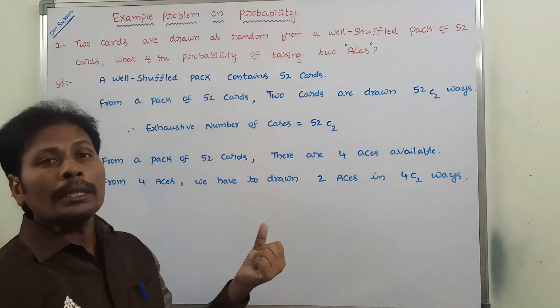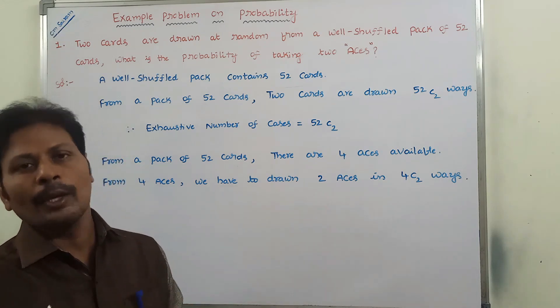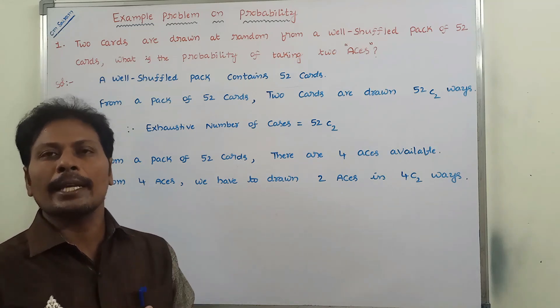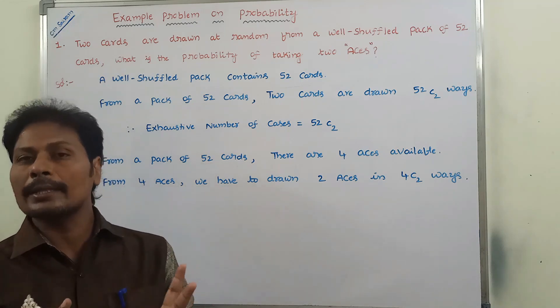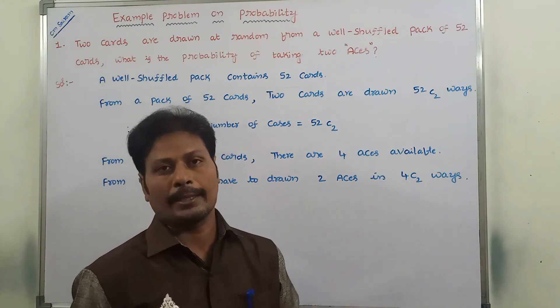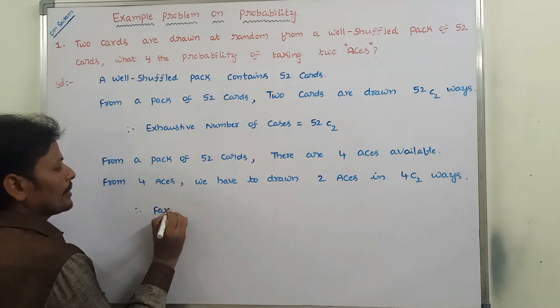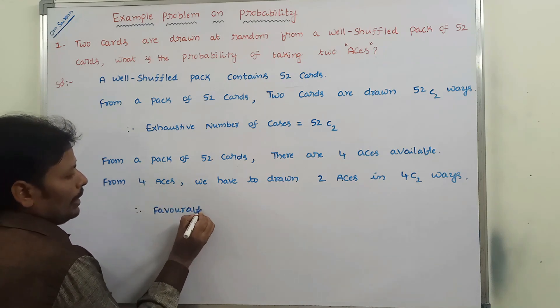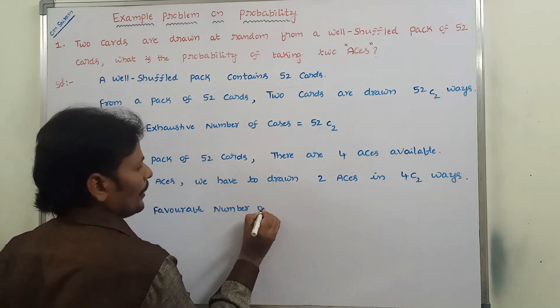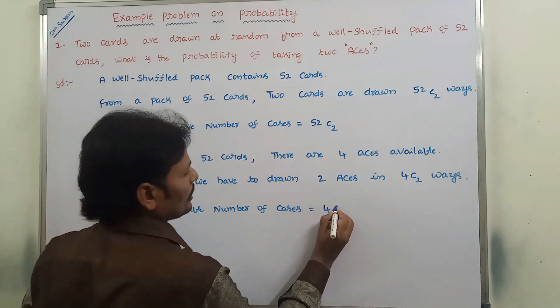This is favorable number of cases. Among the 52 cards, how many aces are there? Only four aces. Among those four aces, we have to draw two aces in 4 C 2 ways. So this is favorable number of cases, equal to 4 C 2.